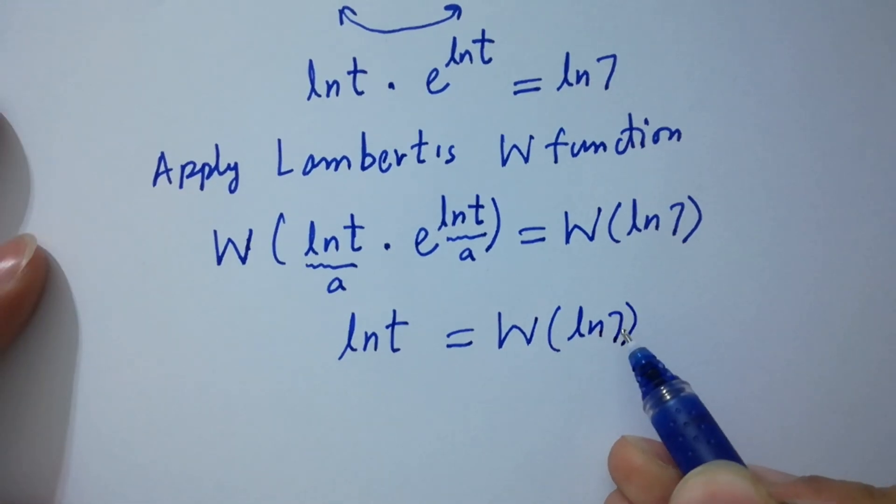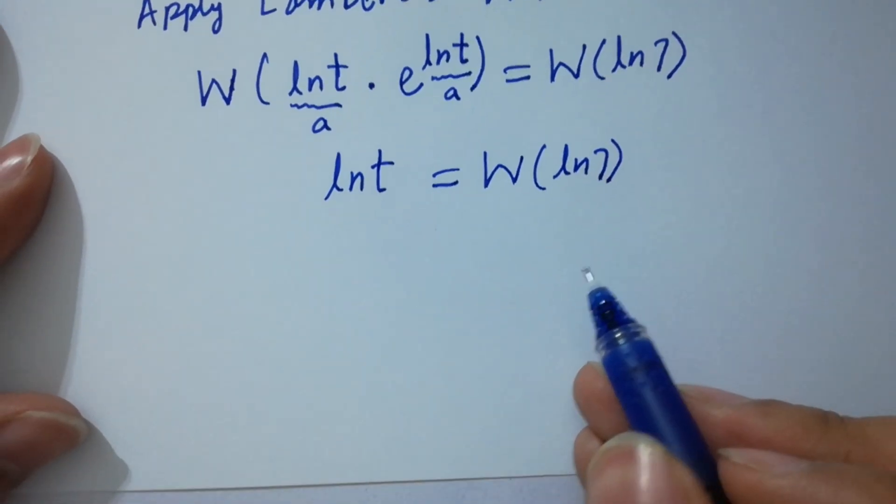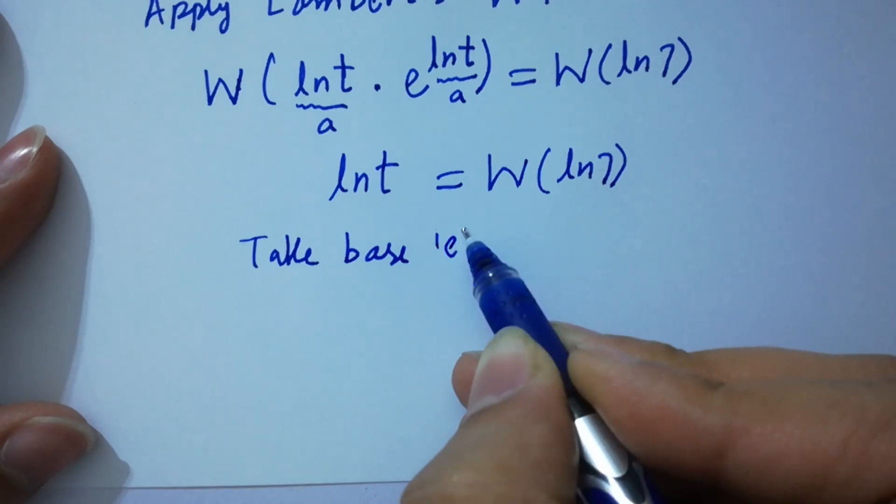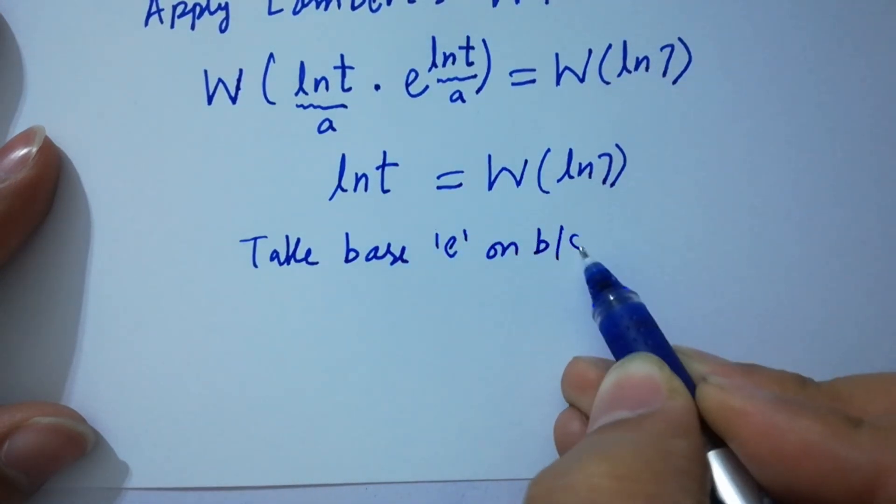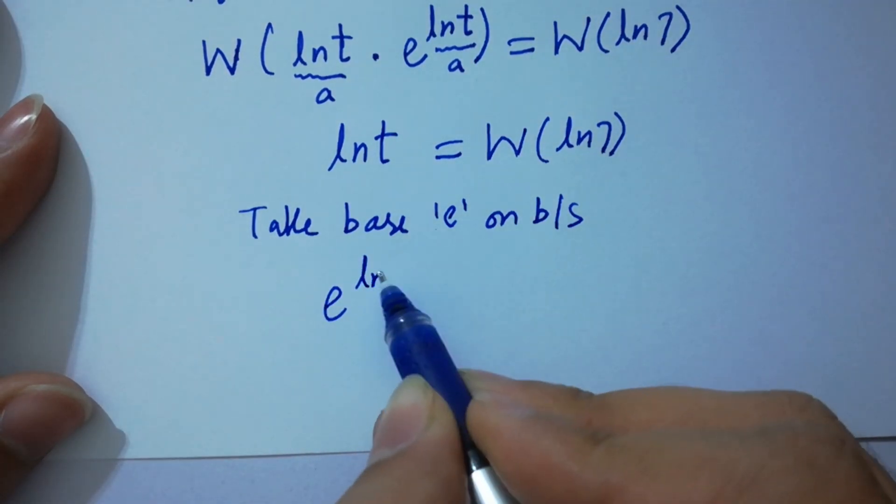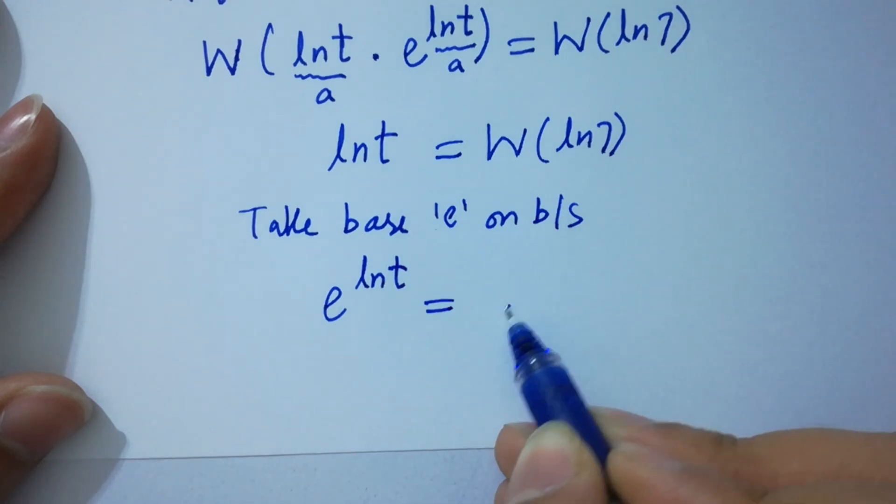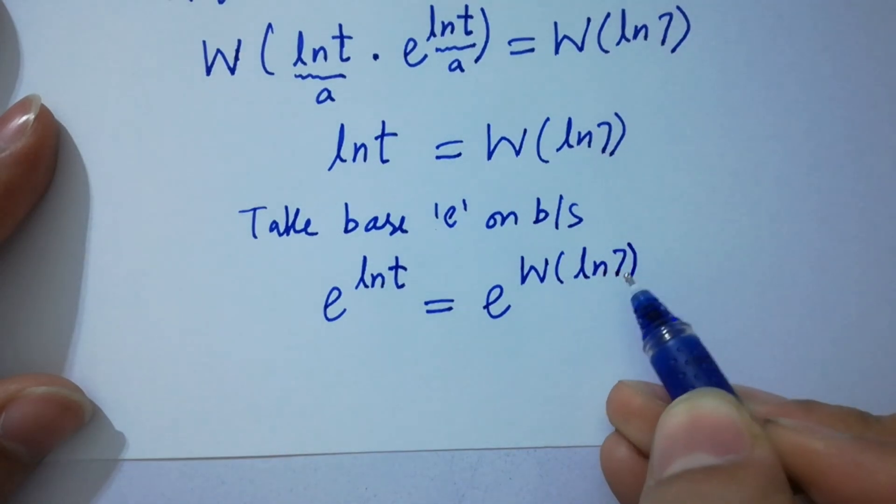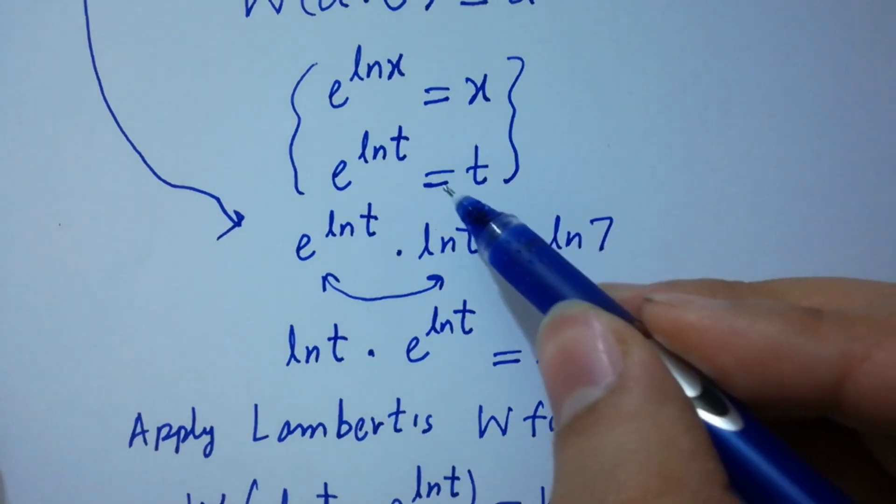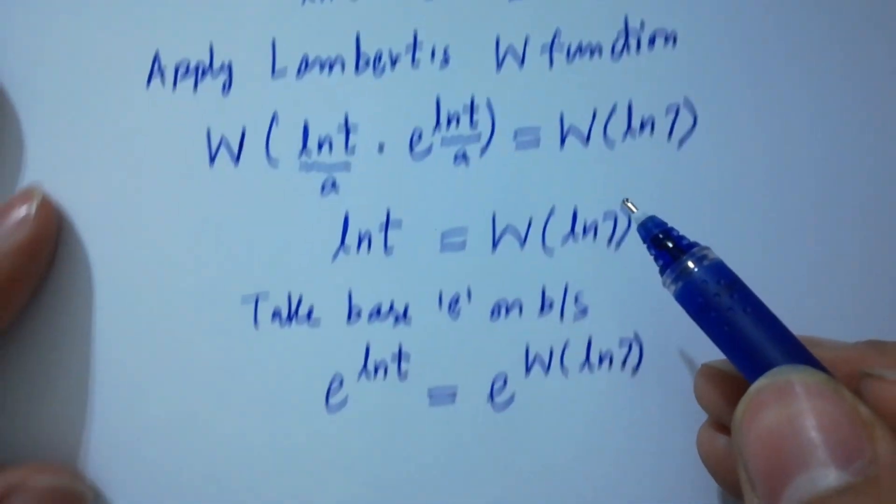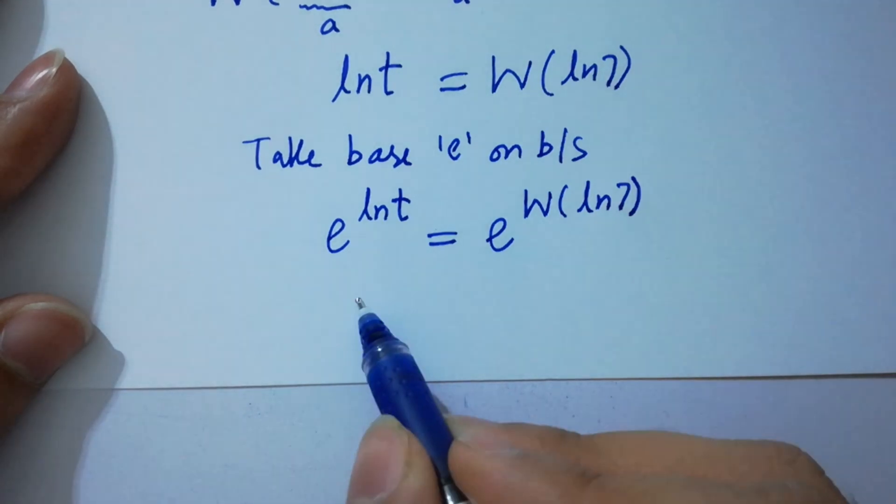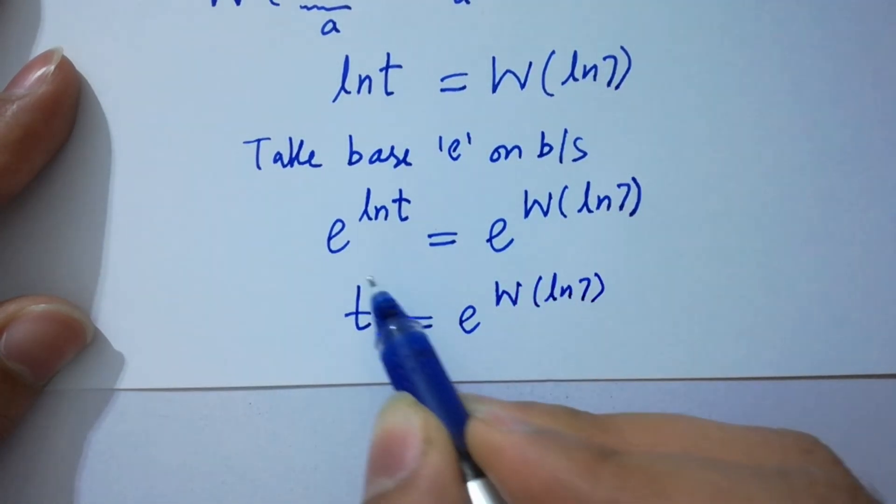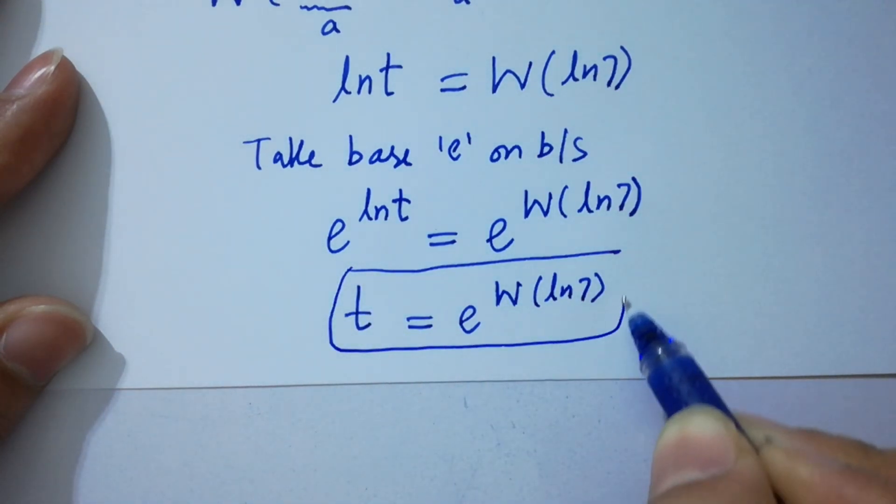In the next step, take base e on both sides: e to the power ln t equals e to the power W(ln 7). Since e to the power ln t equals t, it will be t equals e to the power W(ln 7), which is our value of t.